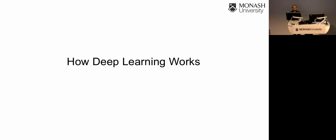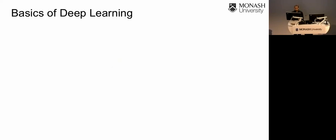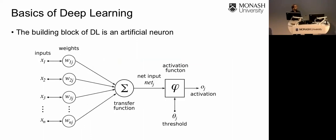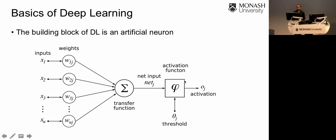Now let's see how deep learning actually works. The basic building block is an artificial neuron. It consists of a set of inputs and a set of weights. The artificial neuron takes a linear combination of these inputs and passes the summation to a thresholding function. If the output is greater than a certain threshold, the neuron is activated; otherwise it is not. This mimics the biological neuron — the inputs are analogous to synapses, the weights are equivalent to synaptic strength, and the neuron fires when the summation exceeds the threshold.